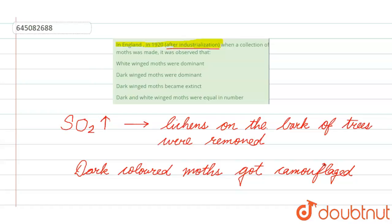This is given in option number two: dark-winged moths were dominant. The first one says white-winged moths were dominant—no, this was the case before industrialization. Third one says dark-winged moths became extinct—no, this was also the case before industrialization. Fourth one says both were equal in number, so this is also incorrect. The correct answer is option number two. Hope you understood the solution, thank you.